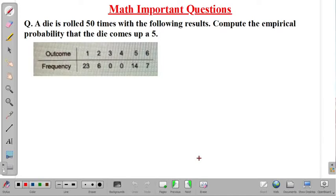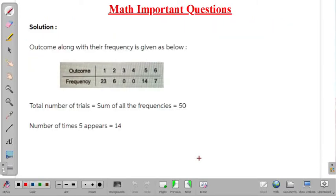So see here, this is a table showing the frequency of each outcome. And if you add all the frequency, it will be equal to number of trials. So number of trials is equal to sum of all the frequency, it is equal to 50. And also in the problem, it is specified that 50 number of trials is there.